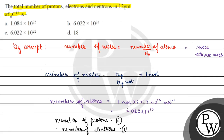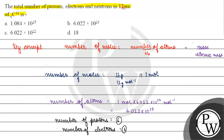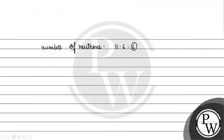So the total number of protons, electrons and neutrons has come. We have 6 protons, 6 electrons and 6 neutrons. So one atom of ¹²C₆ (carbon) has 18 total particles: 6 neutrons plus 6 electrons plus 6 protons.